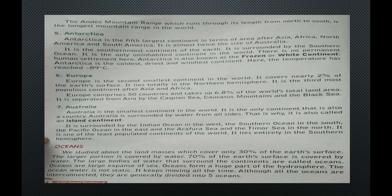Europe is the second smallest continent in the world. It covers nearly 2% of the earth's surface and lies totally in the northern hemisphere. It is the third most populous continent after Asia and Africa. Europe comprises 50 countries and takes up 6.8% of the world's total land area. It is separated from Asia by the Caspian Sea, Caucasus Mountains and the Black Sea.